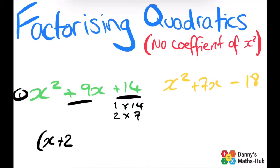x plus 2, because it's positive 2, and x plus 7. We have fully factorized this quadratic.